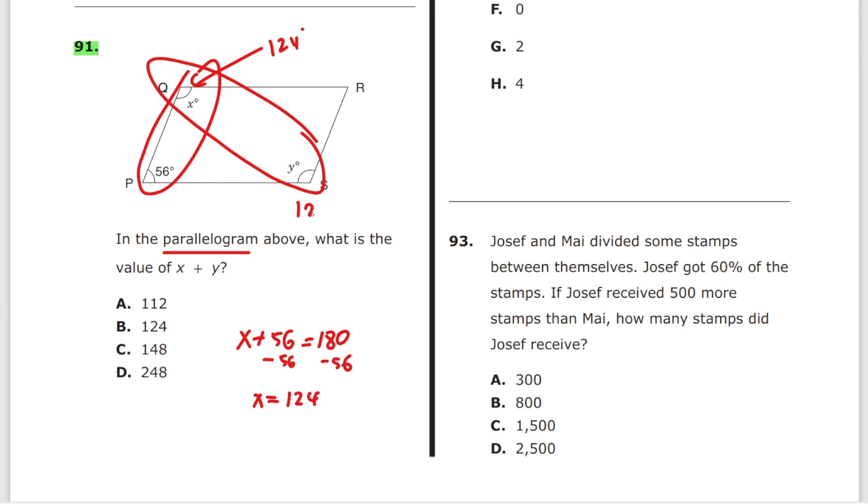degrees. Y is also 124 degrees because they are identical. So 124 multiplied by 2 gives you 248. The answer is D. That's it.